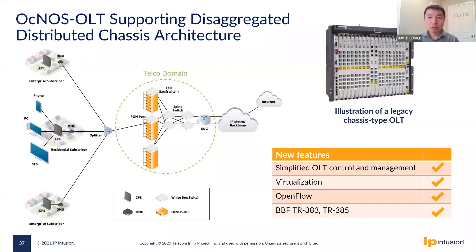What challenges do we want to solve? First of all, it is about the exponential increase in bandwidth demand, which requires a good networking scaling strategy for our PON network. How can a PON network be scaled up today in a traditional way? A customer would try to buy a chassis-type OLT — as illustrated in the upper right corner — and buy one or two switch cards, plug them in, and one or a few OLT line cards at the beginning. When the demand increases, they buy more OLT line cards to scale up the network.